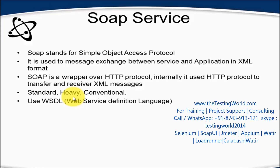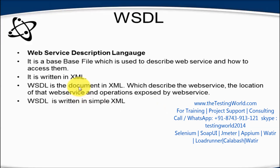In SOAP services we use WSDL — Web Service Description Language file. It is a base file used to describe the web service and how to access it. Everything about the SOAP service will be mentioned in this WSDL file: what functionalities are provided, how we can access the web service, what kind of response we are going to get, and what kind of input or request we can send.